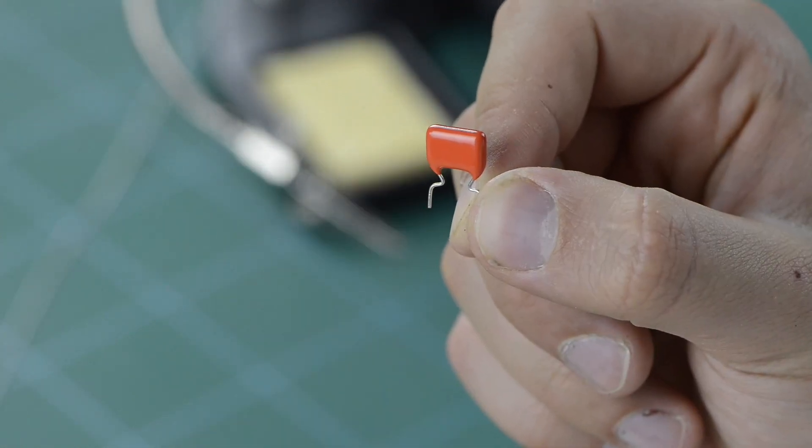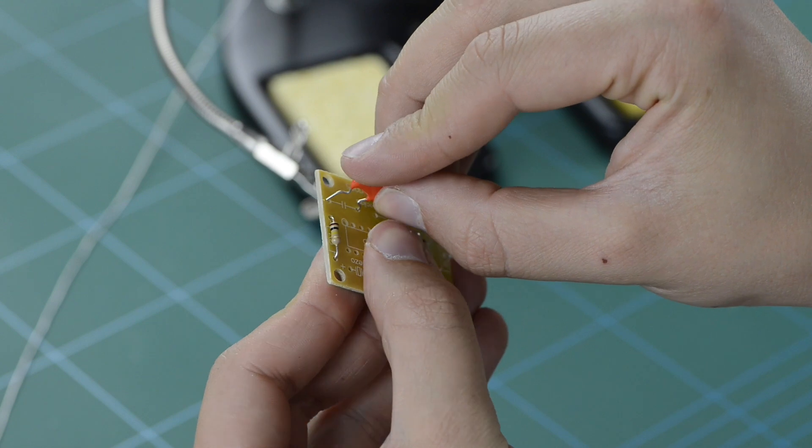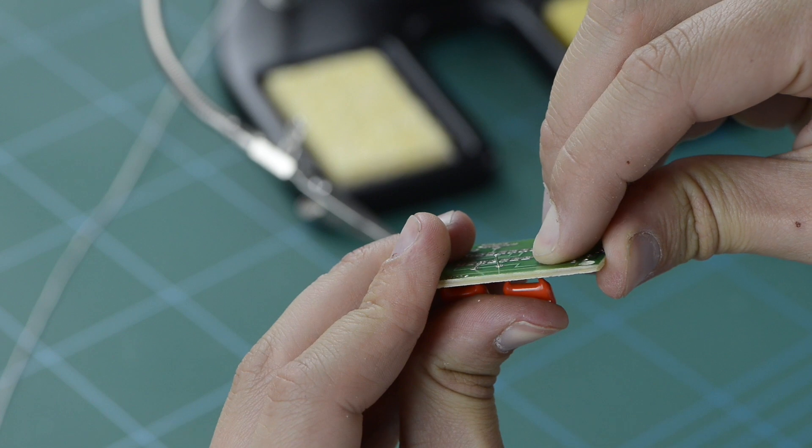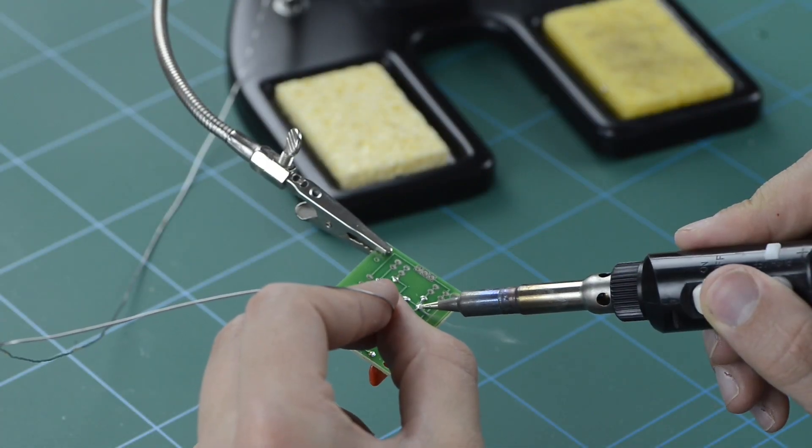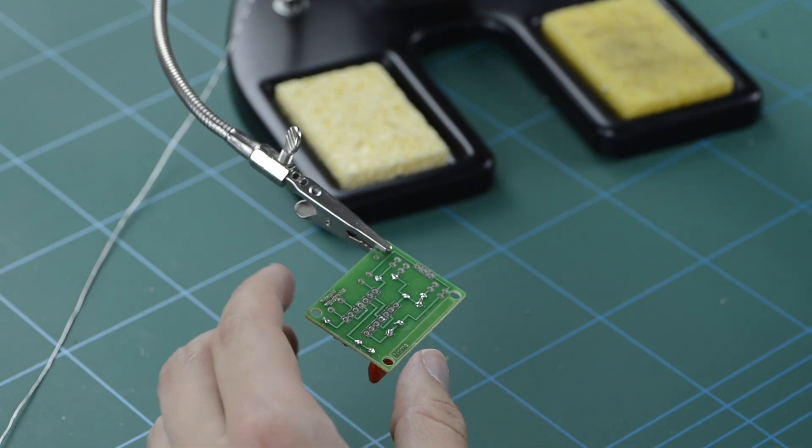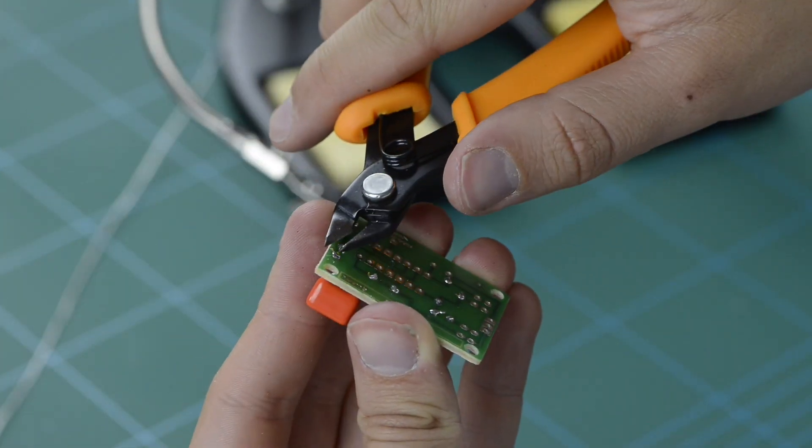Next, select your capacitors and pop them through the holes on the PCB designated for these components and bend the legs back against the PCB board. Again, pop the PCB board into the helping hands and solder the contacts to the solder tags. Then remove from the helping hands and snip off any excess material.